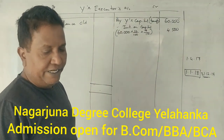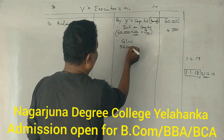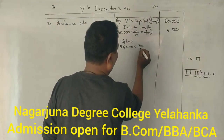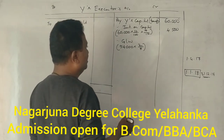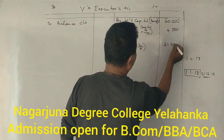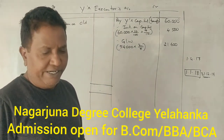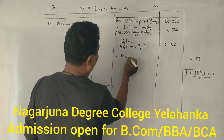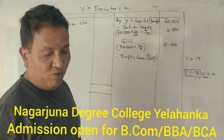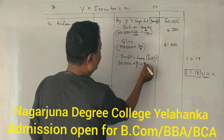Next, Y's share of goodwill: Y's ratio is 2/5, so Y's share of goodwill comes to 21,600. Next, Y's share of profit based on last year's profit — profit and loss account — Y's share is 2/5 for 9 months, which gives 9,000.